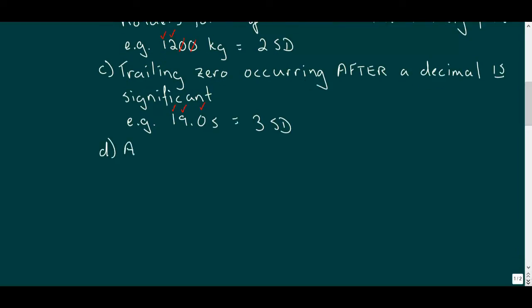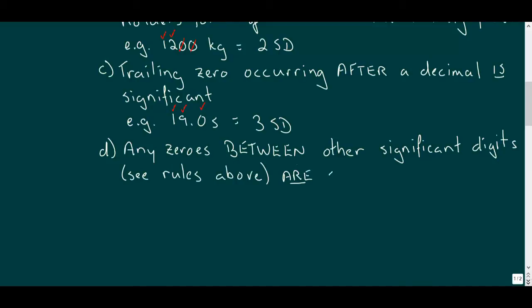Any zeros that lie between other sig figs, once we've applied the previous rules, are significant because rather than placeholders, they supply proper spacing between relative place values, providing significance indirectly to the other digits. For this one, let's use a couple of examples.